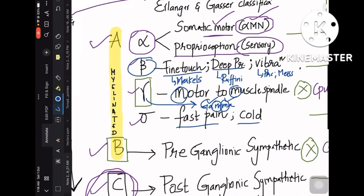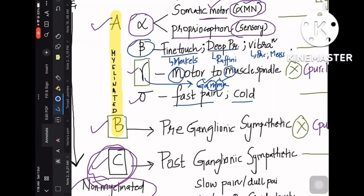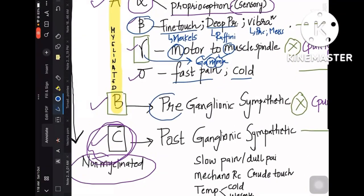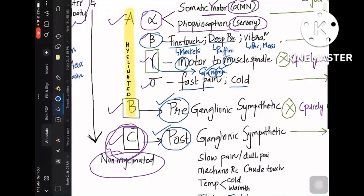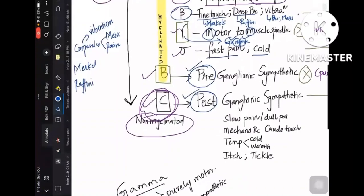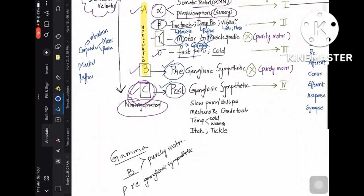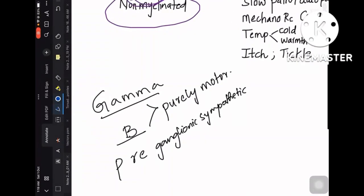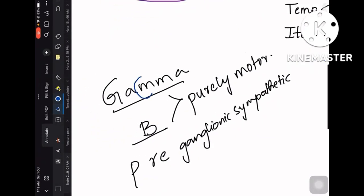Coming to B fibers, these are preganglionic sympathetic, whereas C fibers are postganglionic sympathetic — first comes pre, then post. When discussing the types of senses B and C carry, these are autonomic sensations. Importantly, among all fibers from A-alpha to C, there are two that are purely motor: A-gamma and B. A-gamma is motor to the muscle spindle, and B is preganglionic sympathetic.